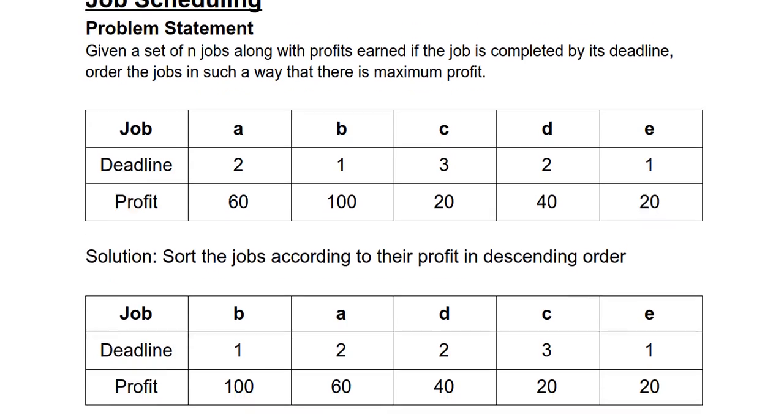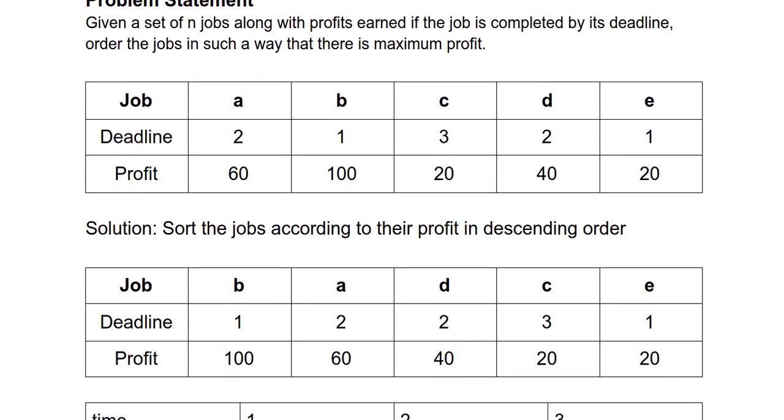In order to solve this question, we need to first sort the jobs according to their profit in descending order, and we get that b has the highest profit followed by a, d, c, and e. Once these jobs have been sorted, we select the job with the highest profit, which is b. B gets completed at the end of first second. Now we look at the remaining jobs.